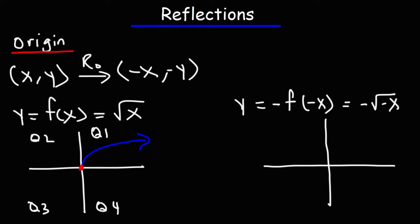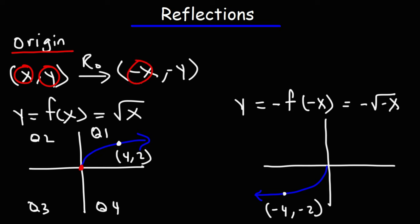In either case, the graph is going to end up in the same place. Going back to our original point (4, 2), both x and y will change. So now it's going to be (-4, -2), placing it in quadrant 3. Remember, any time you reflect over the origin, both x and y will change sign: (x, y) becomes (-x, -y).